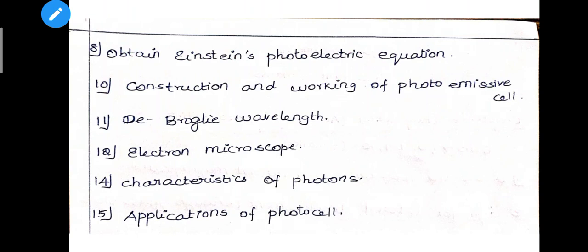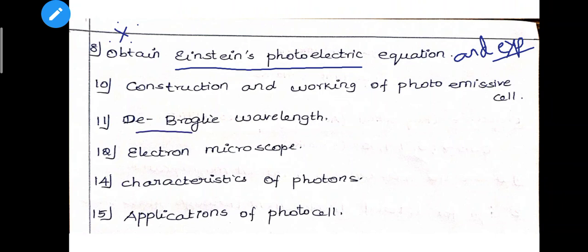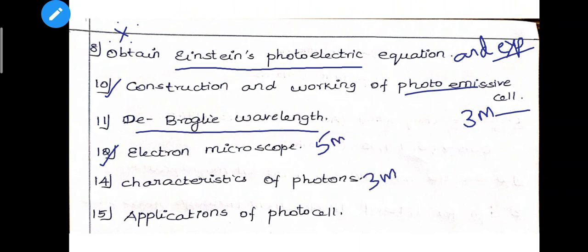Next, 8th question - Einstein's photoelectric equation and explanation. Very very important 5 mark question of the chapter. Graph also. Construction and working of Photoemissive cell - 3 mark question. Next, 11th question - de Broglie wavelength. 12th question - Electron microscope, also important 5 mark. 14th question - characteristics of photons, applications of photons - 3 mark, sometimes 5 mark.